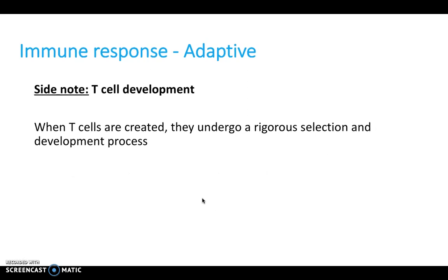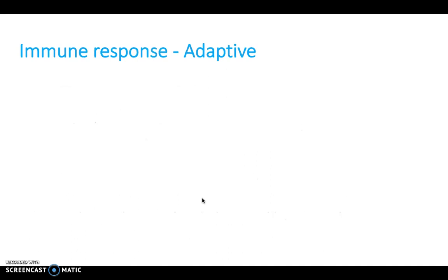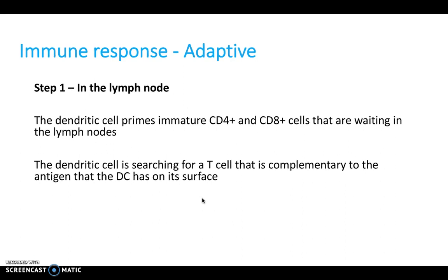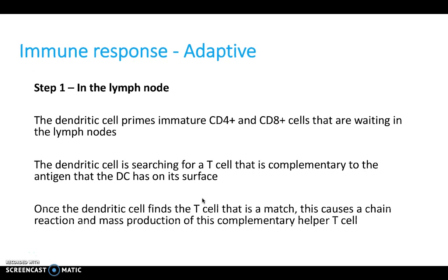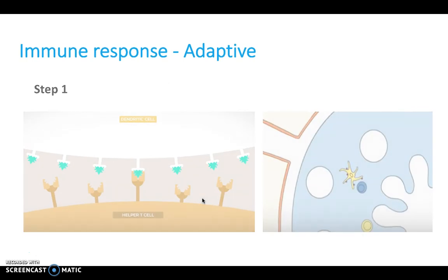The surviving T cells are equipped with a specific surface ability. In the lymph node, the dendritic cells prime these immature helper and killer T cells. The dendritic cell searches for a T cell complementary to the antigen on its surface — in other words, complementary to the invading pathogen. When it finds a match, this causes a chain reaction and mass production of that complementary helper T cell.